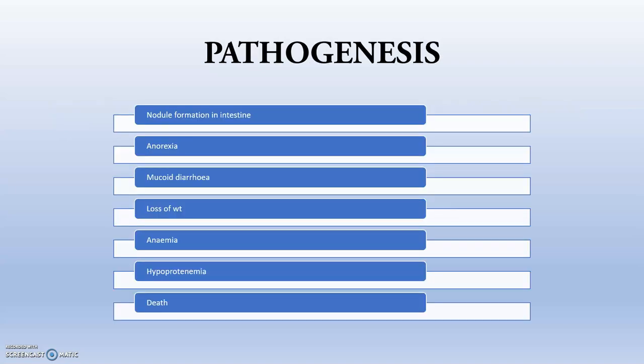Moving to pathogenesis: there will be nodule formation in the intestine that leads to anorexia. Due to erosion and nodular formation in the intestine, there will be mucoid diarrhea. Due to lesser eating habits, this leads to loss of weight. Loss of proteins leads to anemia and hypoproteinemia, and eventually this can lead to death.